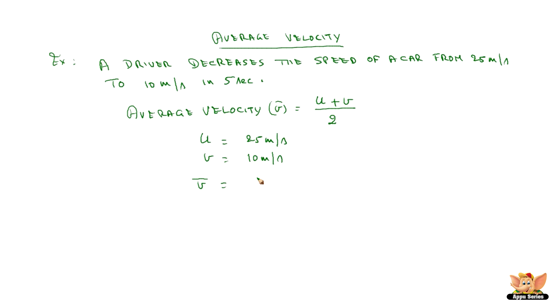So v bar equals 25 plus 10 by 2, which is 45 by 2, which is 17.5 meter per second.